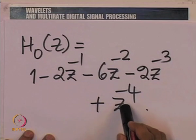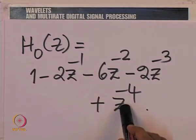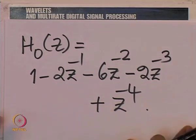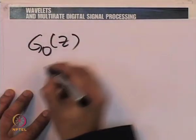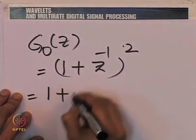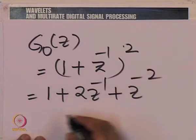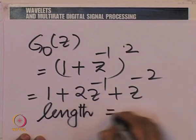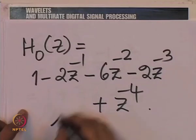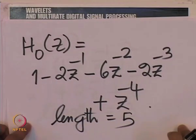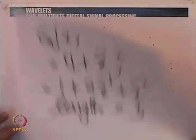What we have just derived is a very important biorthogonal filter bank: the celebrated 5-3 filter bank in JPEG 2000. JPEG 2000 admits two kinds of filter banks: a 5-3 filter bank and a 9-7 filter bank. Now we know what 5-3 and 9-7 mean — they refer to the lengths of the impulse responses: 5-3 means the impulse responses are of lengths 3 and 5.